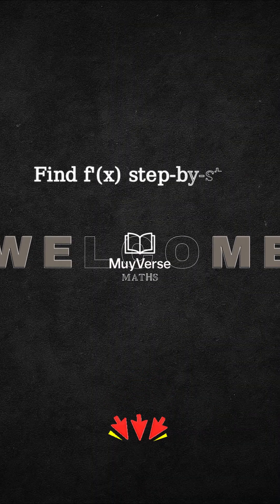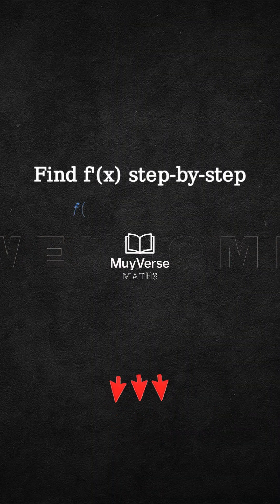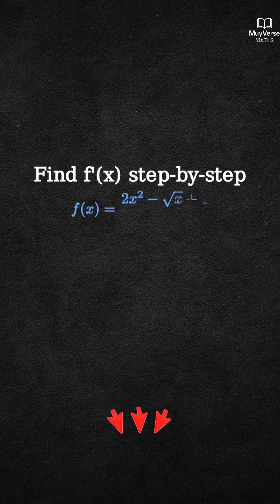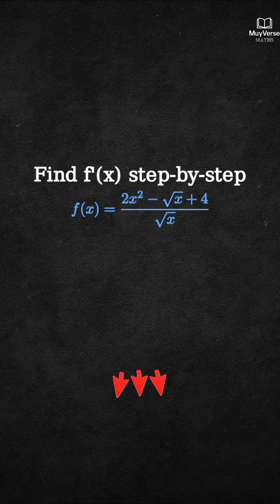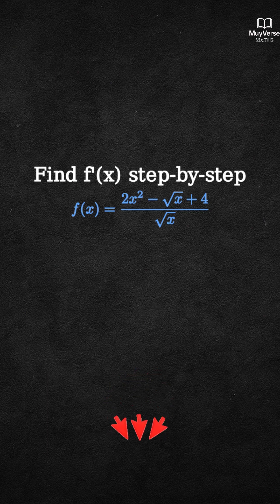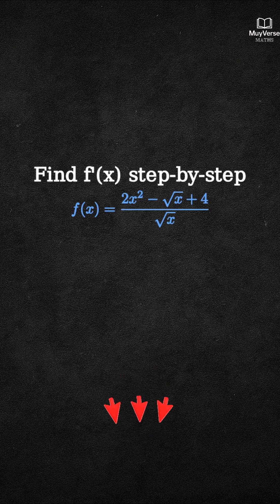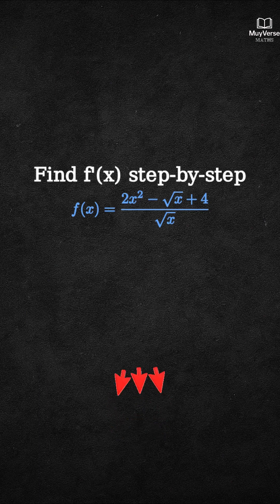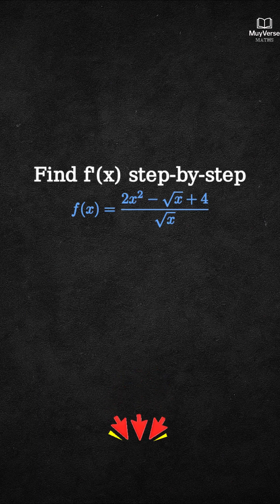We are going to find f prime of x for the function f of x equals the fraction with numerator 2x squared minus square root of x plus 4 and denominator square root of x. We'll go step by step: simplifying first, then differentiating, and finally presenting a clean answer.